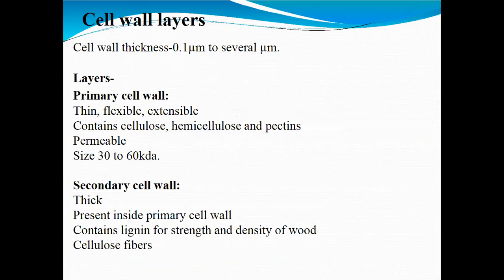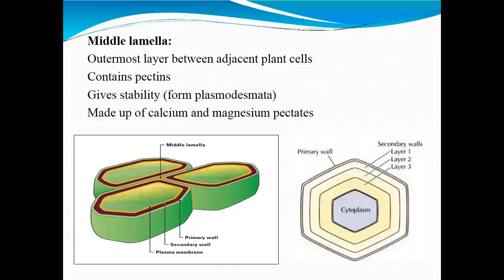Cell wall thickness ranges from 0.1 micrometers to several micrometers, depending on the age and type of the cell. The primary cell wall is thin, flexible, extensible, and contains pectin, hemicellulose, and cellulose, and is permeable with a size of 30 to 60 kilodaltons. In comparison, the secondary cell wall is thick, present inside the primary cell wall, and contains lignin for giving strength and density to wood, as well as cellulose fibers. The middle lamella is the outermost layer between adjacent plant cells, containing pectins and giving stability to the cell.